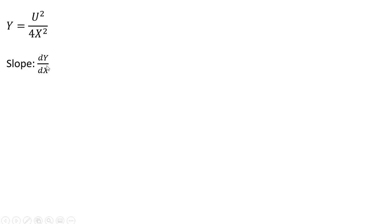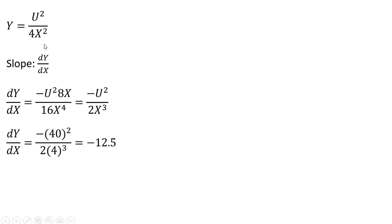Now we get the slope of this function — the slope is just a derivative. Taking the derivative of u squared divided by 4x squared, we use the quotient rule here, so it's a little messy. Following the quotient rule, we end up with minus u squared divided by 2x cubed. Now we evaluate u and x at our values: utility was 40 at this bundle and x is 4, and simplifying we get minus 12.5 — the same answer as method one.